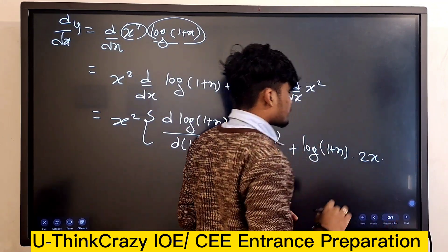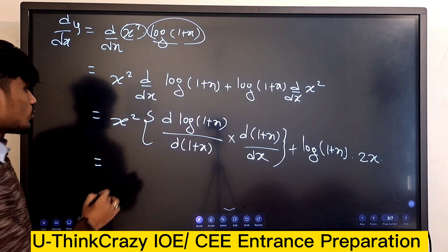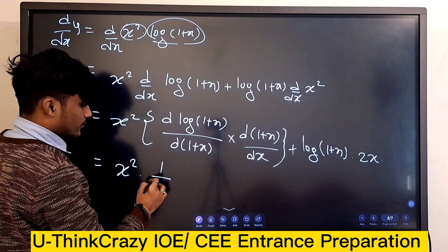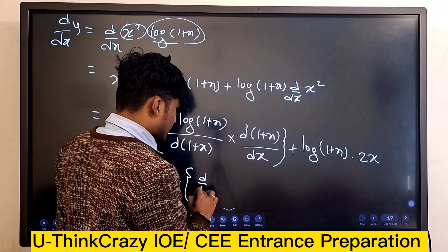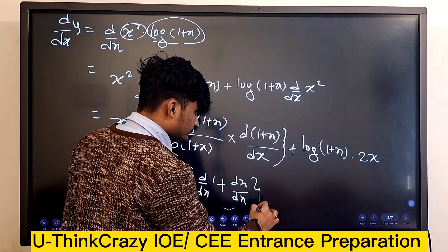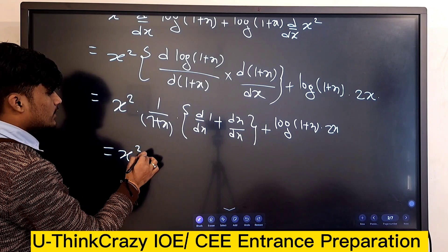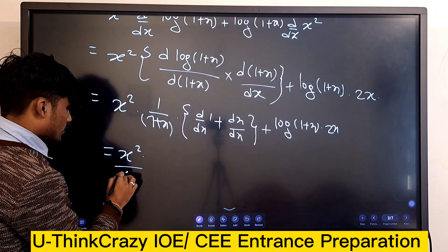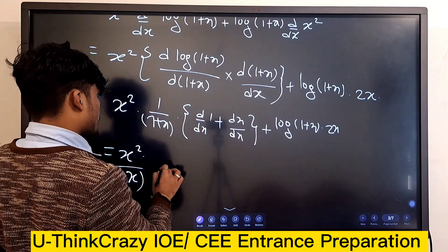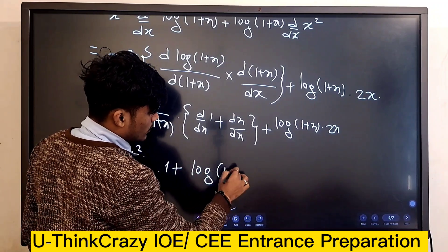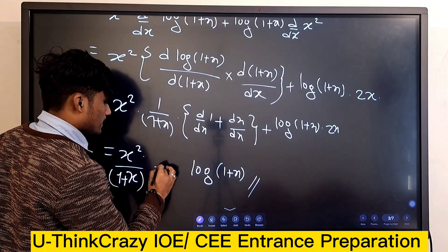So: d/dx of (1 + x) plus log(1 + x) into 2x. Simplifying: 1 divided by (1 + x) times 1, plus log(1 + x) into 2x. That gives us our answer.